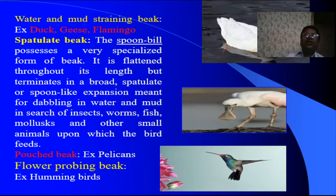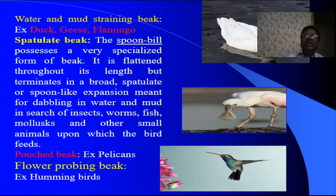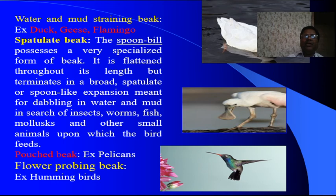This is the last slide — water and mud-straining beak. Examples are duck, geese and flamingos. The spatulate type of beak, exemplified by the spoonbill, is flattened throughout its length but terminates in a broad spatulate or spoon-like expansion, meant for dabbling in water and mud in search of insects, worms, fish, mollusks and other small animals. The pouch beak — example is pelican. The flower-probing beak — example is hummingbird.